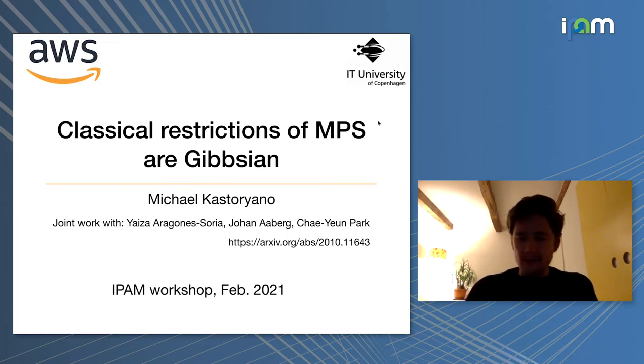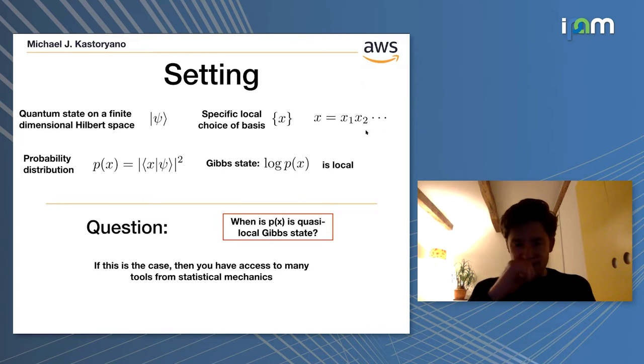The topic of the work is to show a proof of a statement that classical restrictions of matrix product states are Gibbsian. So without further ado, I'll jump straight into the setting.